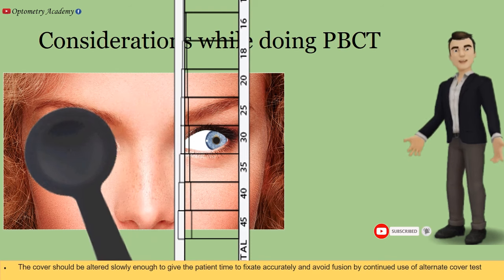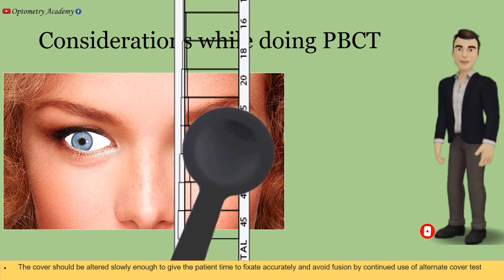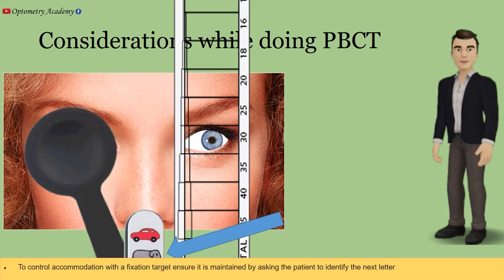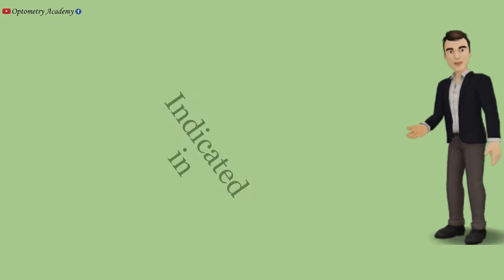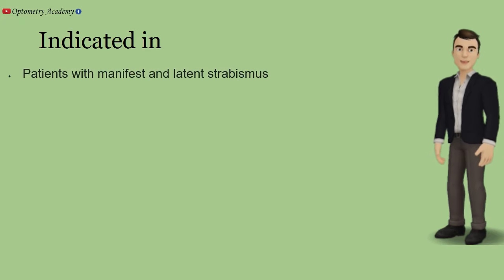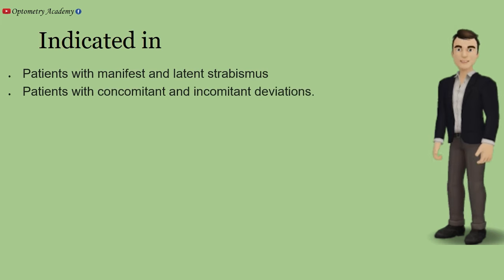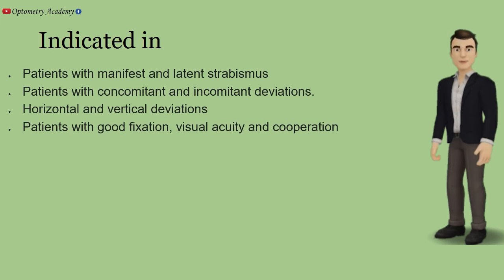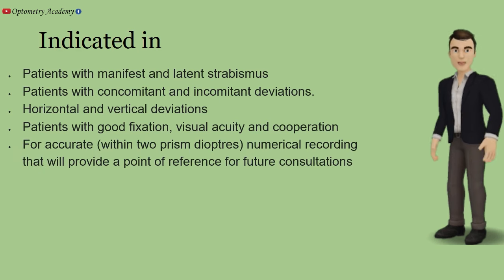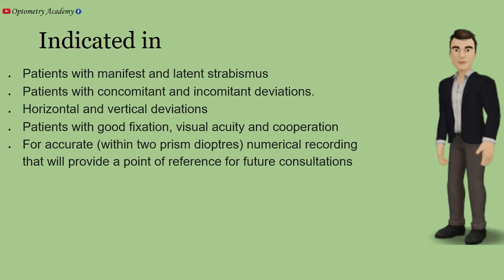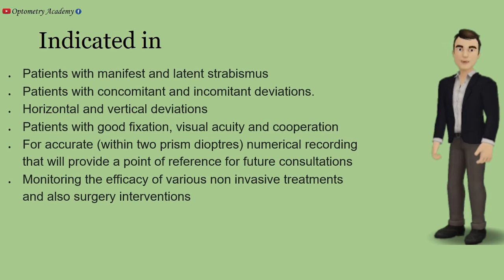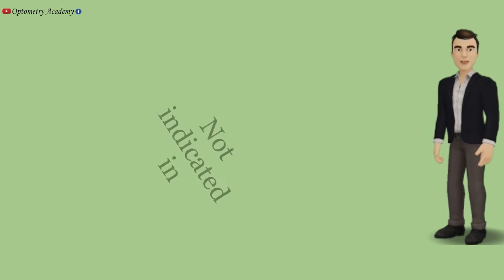The cover should be alternated slowly enough to give the patient time to fixate accurately and avoid fusion. To control accommodation with a fixation target, ensure it is maintained by asking the patient to identify the next letter indicated. The PBCT is indicated in patients with manifest and latent strabismus, patients with concomitant and incomitant deviation, horizontal and vertical deviations, and patients with good fixation, visual acuity, and cooperation for accurate numerical recording that will provide a point of reference for future consultations, monitoring the efficacy of non-invasive treatments and surgical interventions.